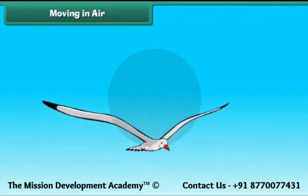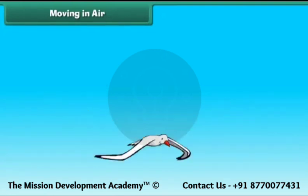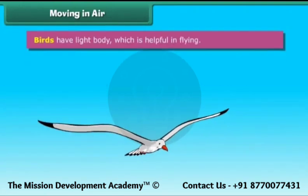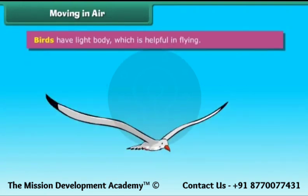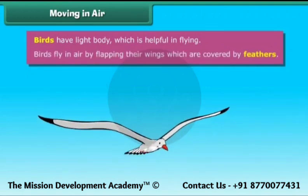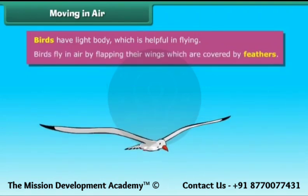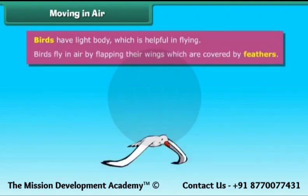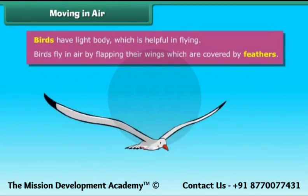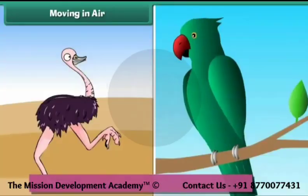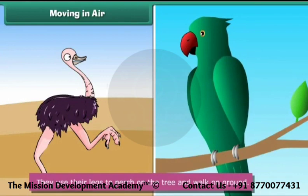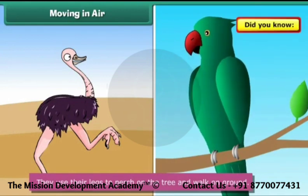Moving in air: birds have a light body which is helpful in flying. Birds fly in air by flapping their wings, which are covered by feathers. They use their legs to perch on trees and walk on the ground.